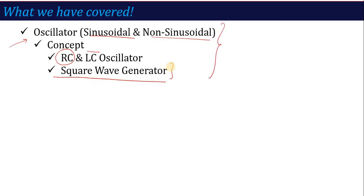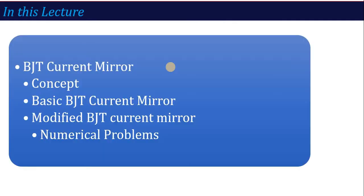Now in this lecture we are going to start Unit 4, which is basically based on BJT and MOS concepts. Here we are going to learn the topics of current mirror and differential amplifier. So first of all, in this lecture we are going to start the concept of current mirror.